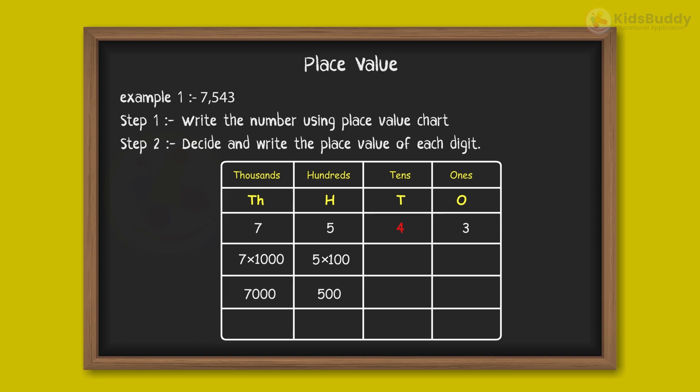The number 4 is in the tens column, so its place value is 4 into 10, that is 40. Lastly, the number 3 is in the ones column, so its place value is 3 into 1, that is 3.